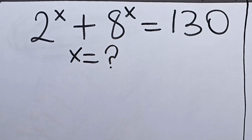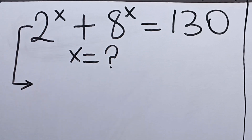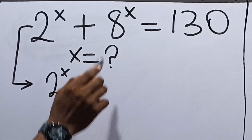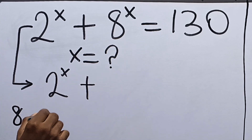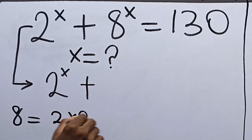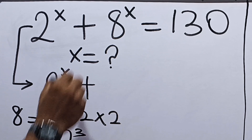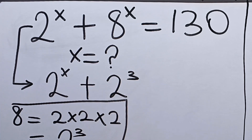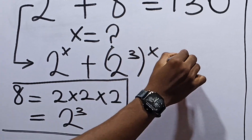The first thing we can do is rewrite this equation. We can write 8 as 2 times 2 times 2, which is equal to 2 raised to the power of 3. Hence 8^x can be written as 2 raised to the power of 3, raised to the power x, giving us 2^x plus (2^3)^x equals 130.